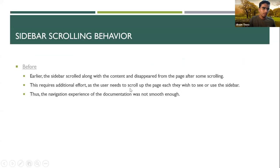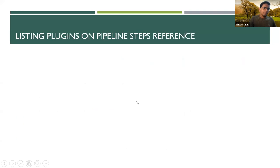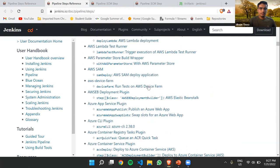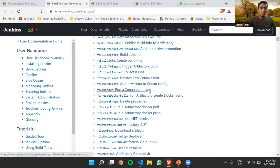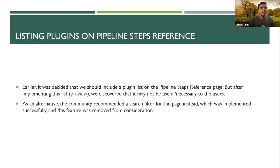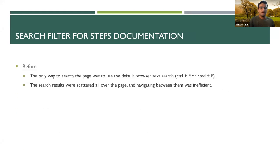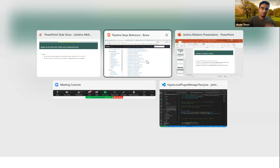The second thing I proposed using wireframes was listing the plugins in the pipeline steps reference — having all plugin headings inside a sidebar so users could click on any one of them. But after I implemented it, we found it might not be very useful. The page was becoming more crowded and dragging us down more than it could benefit us. From community feedback, we found that including a search filter would be much better. We scrapped that change and moved on towards working on a search filter, which was much more successful and effective.